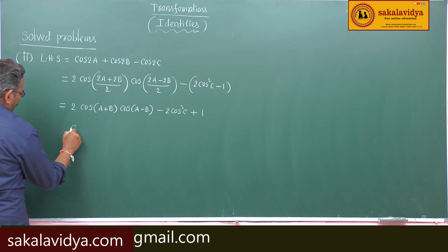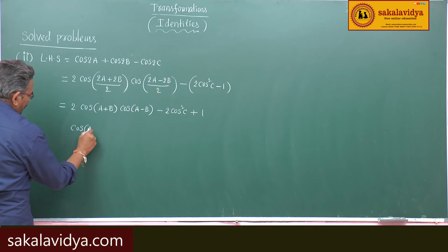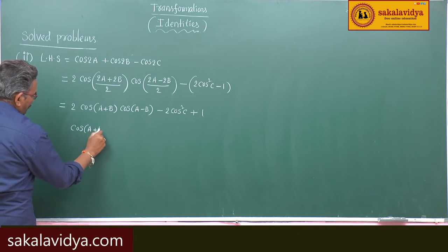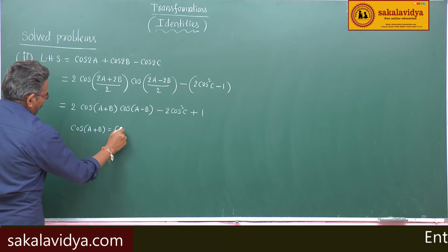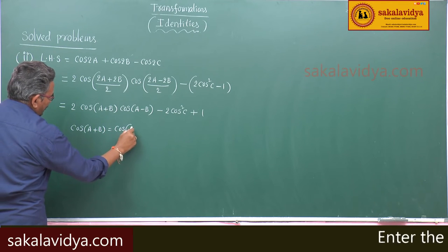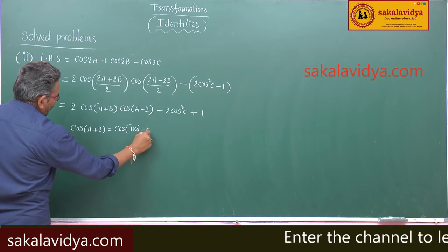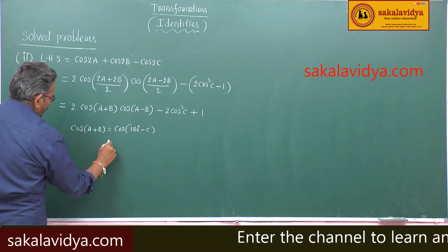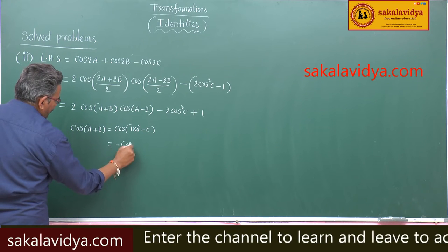Now, cos(A+B) equals cos(180° − C), which equals minus cosC.